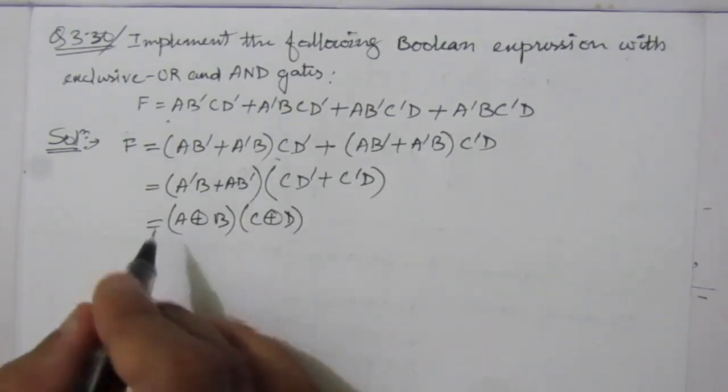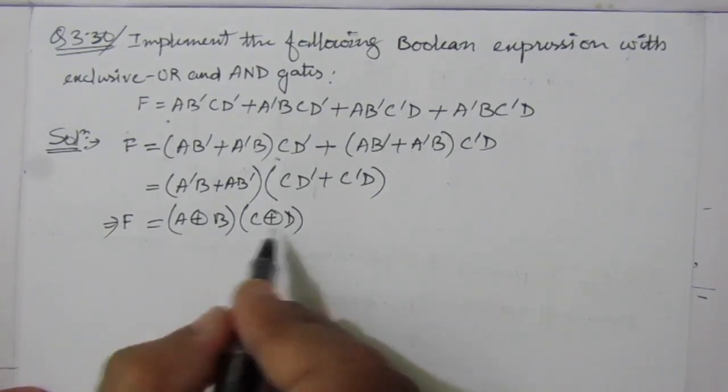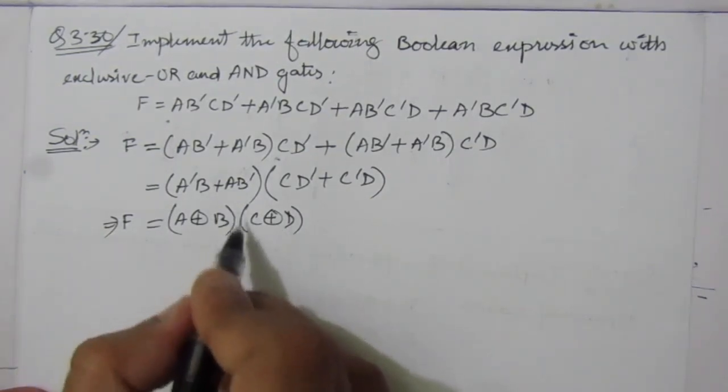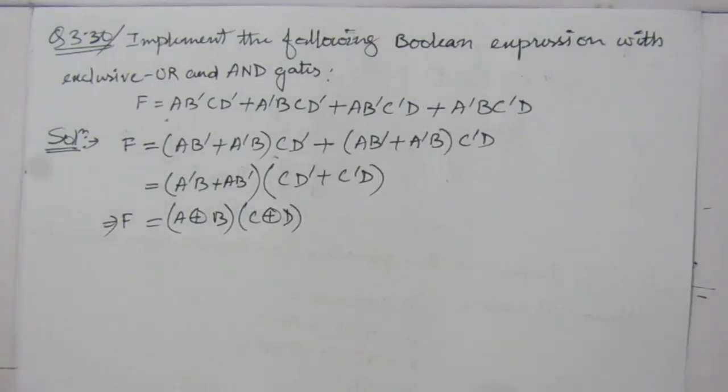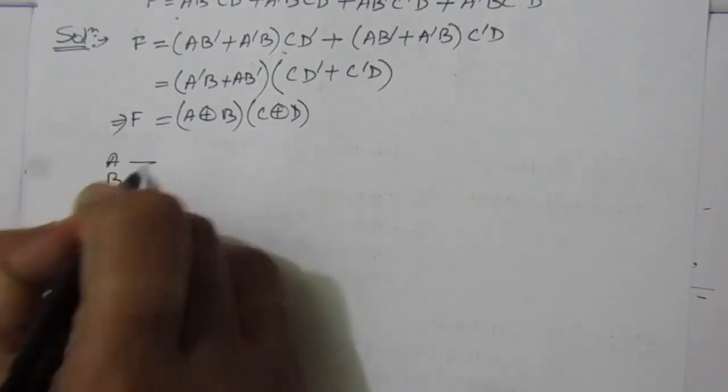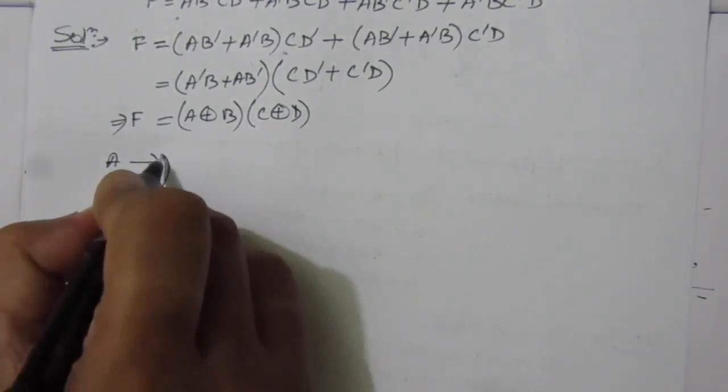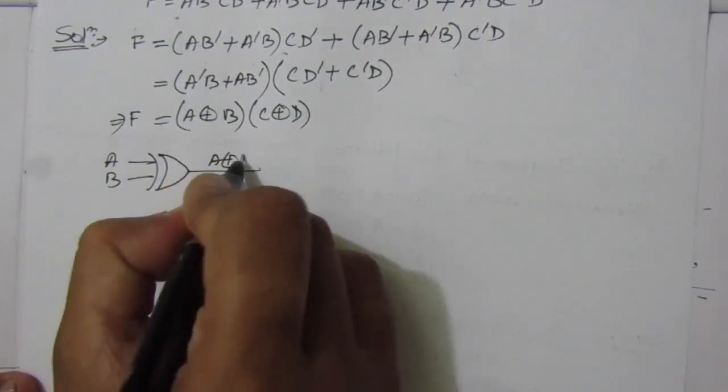Now if we see this function capital F, we have this XOR operation and here we have AND operation. So now we can implement this function using XOR and AND gates. We have two inputs A and B to an XOR gate, so we will get here A XOR B.